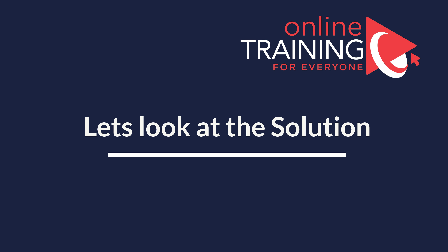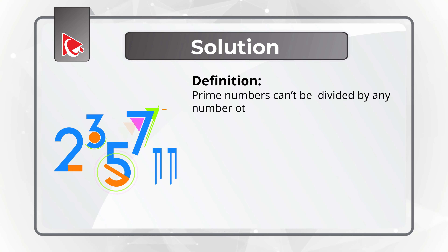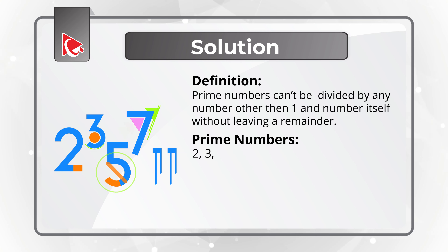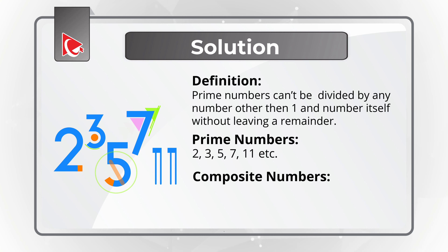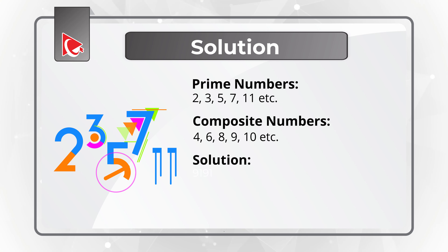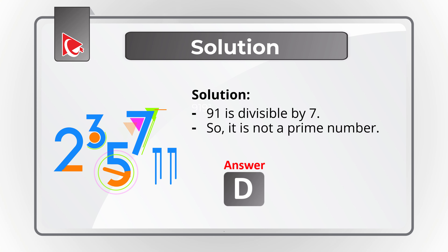Let's move forward and get to the correct solution together. Prime numbers cannot be divided by any number other than 1 and the number itself without leaving a remainder. Examples include 2, 3, 5, 7, 11. The opposite of prime numbers are composite numbers — examples being 4, 6, 8, 9, 10. Out of the numbers presented, 91 can be divisible by 7, so 91 is not a prime number. The correct solution is Choice D, 91.